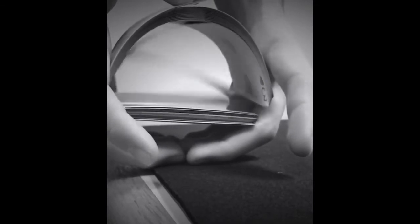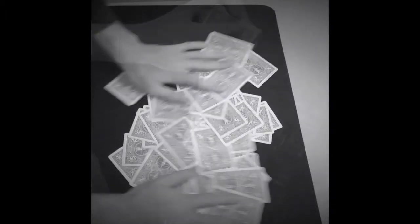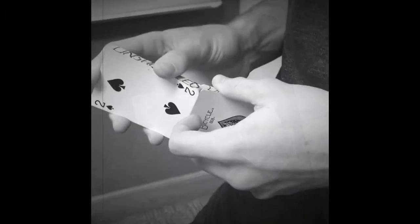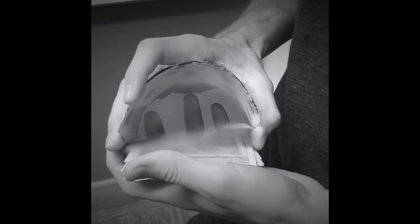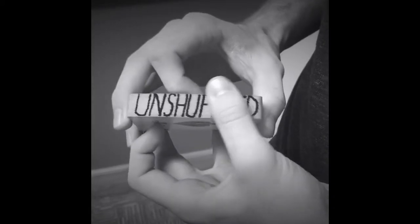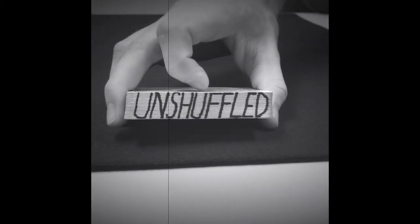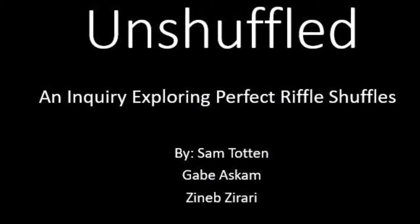When we play cards, why do we shuffle? We shuffle to create a state of uncertainty, a state of randomness, chaos. But what if we were to shuffle in an orderly way, a systematic way — could we really take a process that's supposed to create chaos, but instead create order? In this project, we'll explore what it takes to unshuffle a deck of cards. This is Unshuffled.